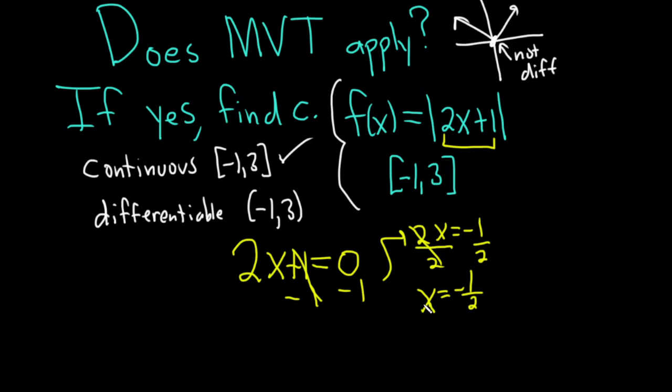Now we still have to check: is -1/2 in our interval? Oh, look at that, it is. Our interval is (-1,3) - the open interval for differentiability. And -1/2 is certainly there. So we have a point where our function is not differentiable in this interval. This means it fails, and the answer is no.